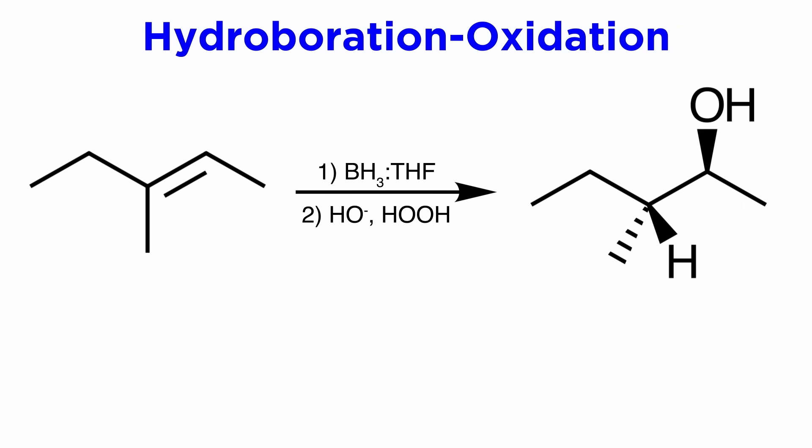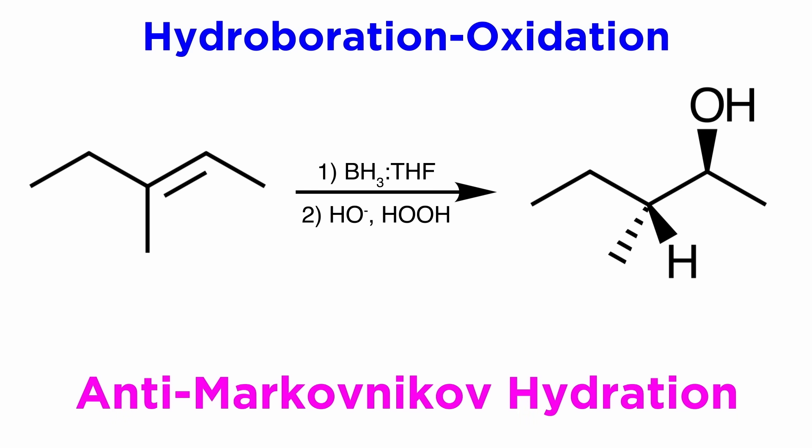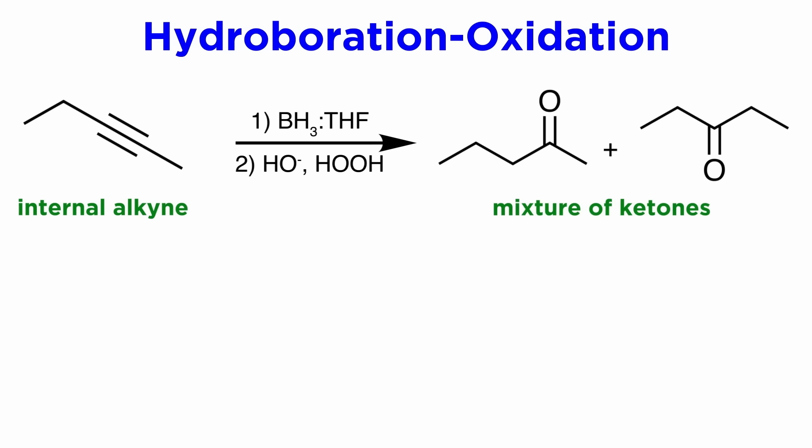Another method of hydrating alkynes is via hydroboration-oxidation, which we already learned about in the context of alkenes, so we know that this reaction gives us the anti-Markovnikov hydration product. In the context of alkynes, this will not matter for an internal alkyne, as again there can be no basis for regiospecificity, and we get the enol just as we would expect, followed by tautomerization to get the ketone.